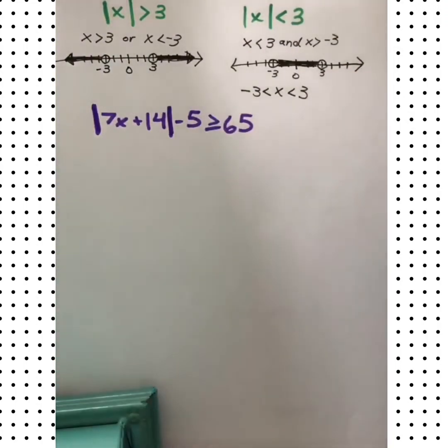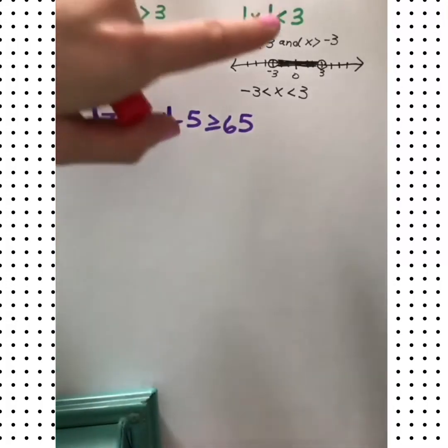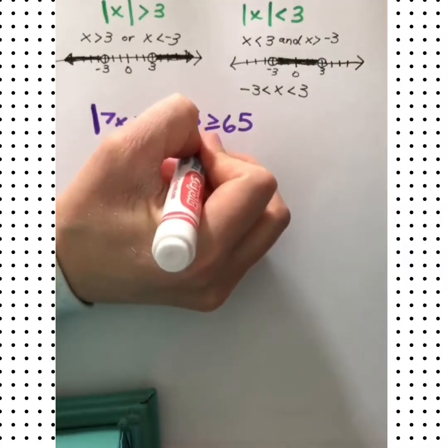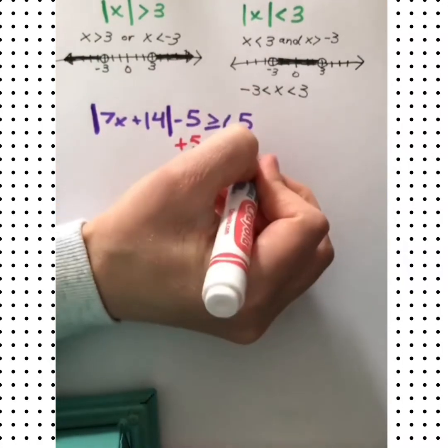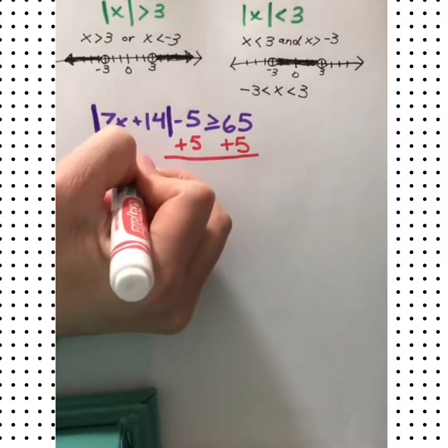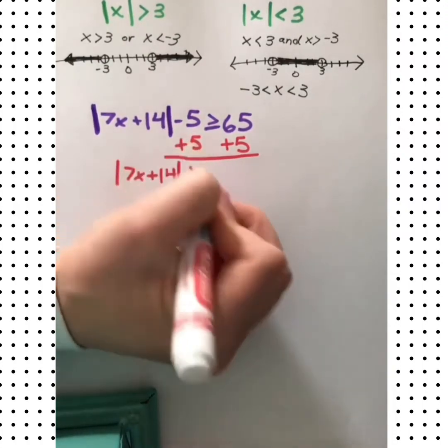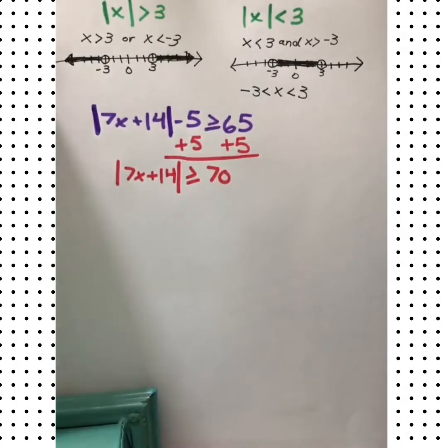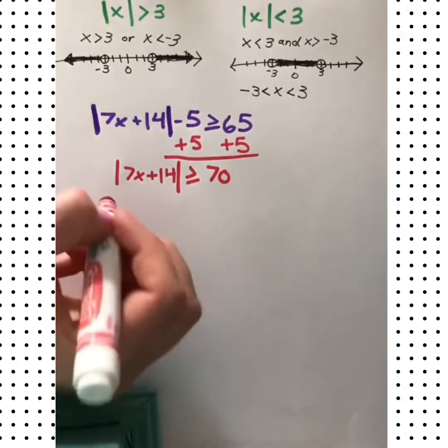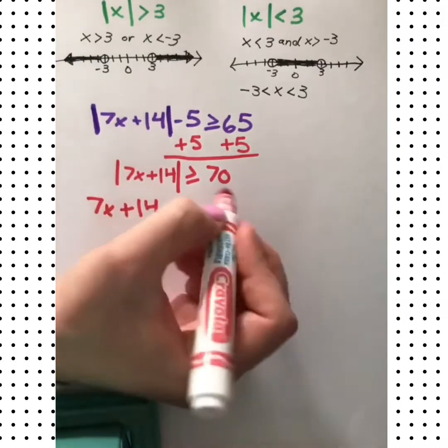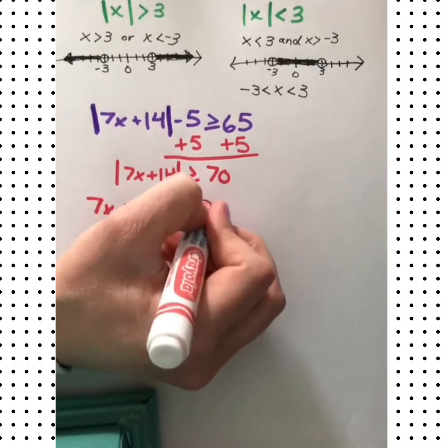We can see that absolute value inequalities are going to have two different cases, kind of like equations do. Let's see how it works with this one. Start out by isolating the absolute value. So let's get rid of this 5, this minus 5. We'll add it to do the inverse. Now that we have the absolute value isolated, we're ready to set up the two different cases. The first one's going to look pretty much like what you see here, but no absolute value. Okay.